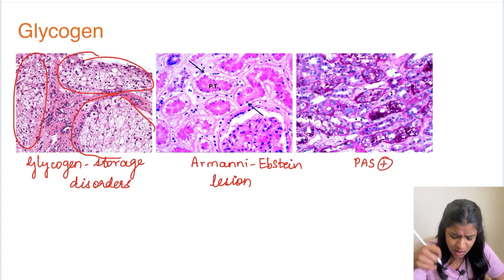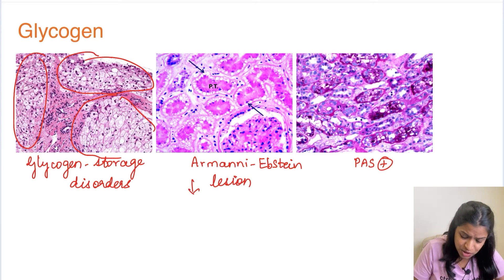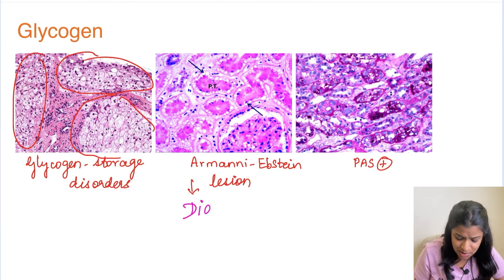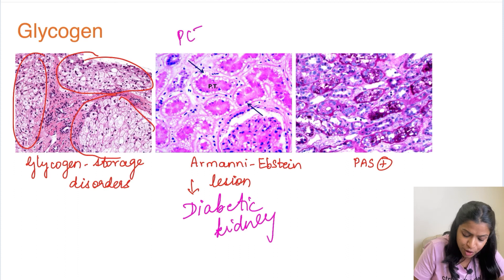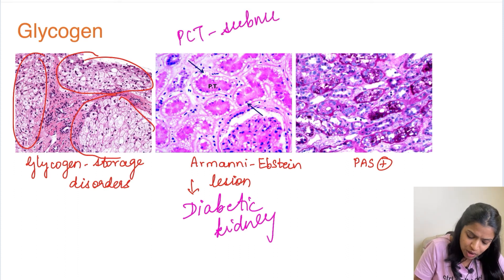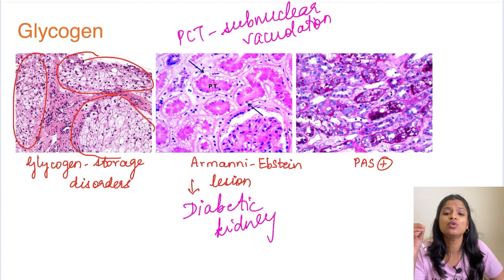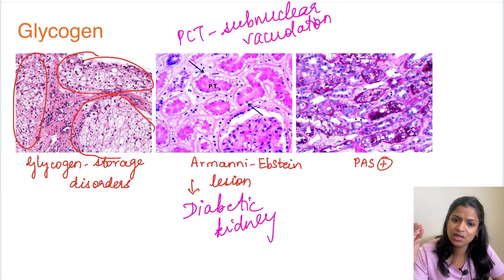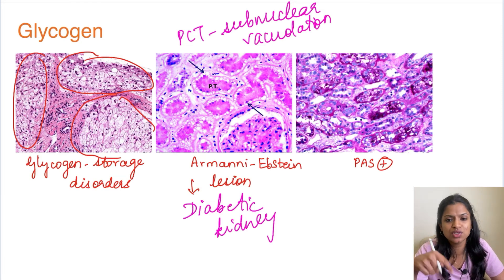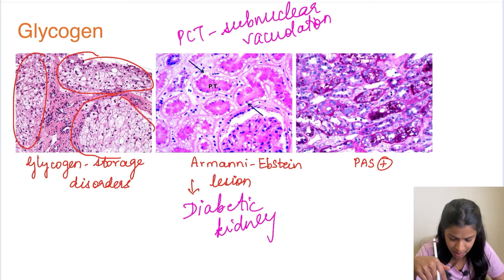Another example is the Armanni-Ebstein lesion, a classical lesion seen in the diabetic kidney. In a diabetic kidney, the proximal convoluted tubules show subnuclear vacuolations. These vacuoles are composed of glycogen. This is one of the lesions seen in a diabetic kidney.